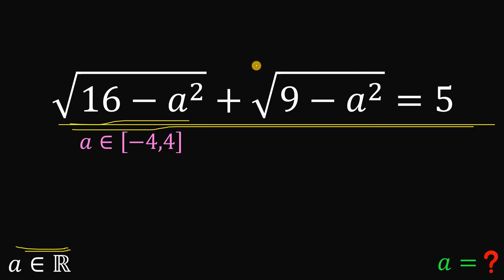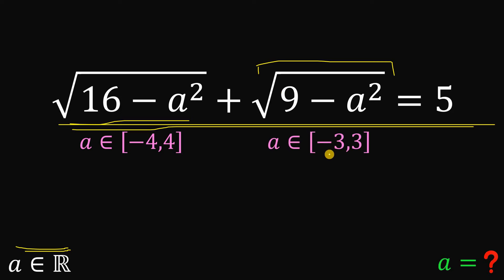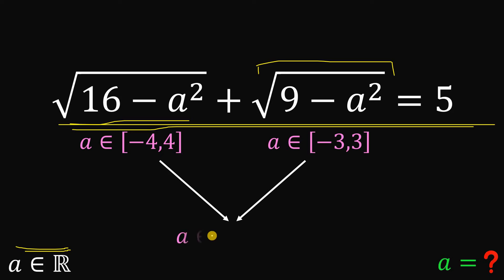Now, in this term, square root of 9 minus A squared, A cannot be greater than 3 or less than negative 3. So A must be between negative 3 and positive 3, inclusive. If we combine these two possible ranges of A, we can say that A must be from negative 3 to positive 3 only.